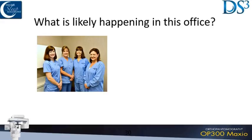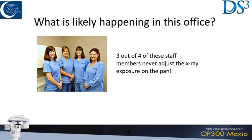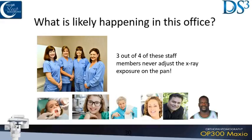Automatic dose control is a patented feature on Instrumentarium products. In an average office, four or five staff members are not going to change settings when taking pans or cone beams — they'll shoot everybody the same. Instrumentarium allows the sensor to register the radiation being received and controls the tube head live time. That way staff don't have to worry about changing settings, clinicians get the perfect image every time, and patients receive the lowest dose possible while getting the best images.